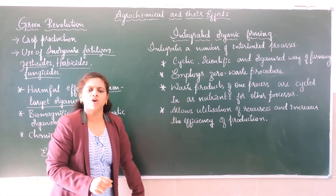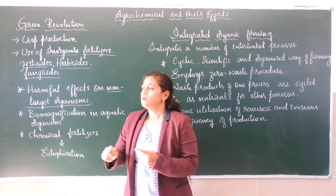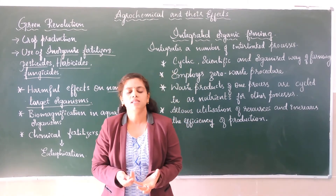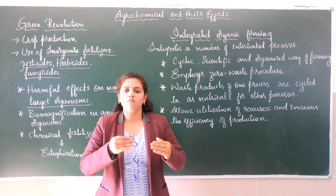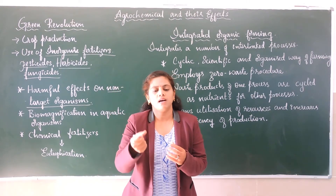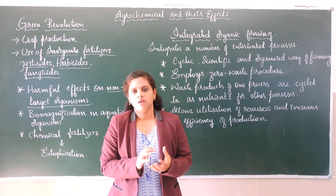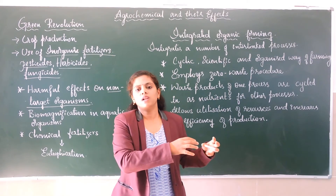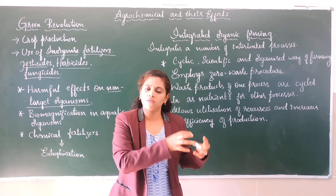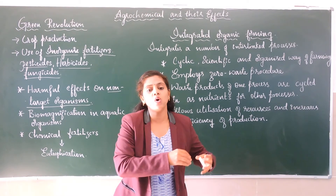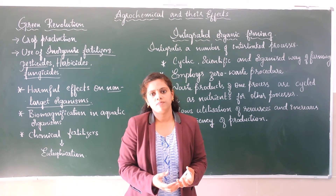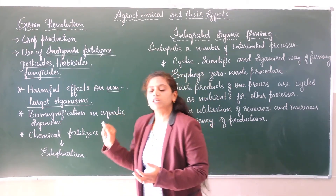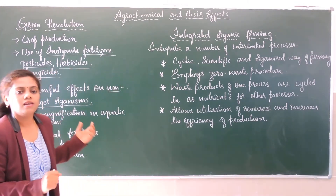The first effect is they will be affecting non-target organisms. For example, if some insecticides are used to get rid of insects which eat the leaves of our crop, when spraying those insecticides, not only the target insect will die but other insects will also die. So non-target organisms also get affected.